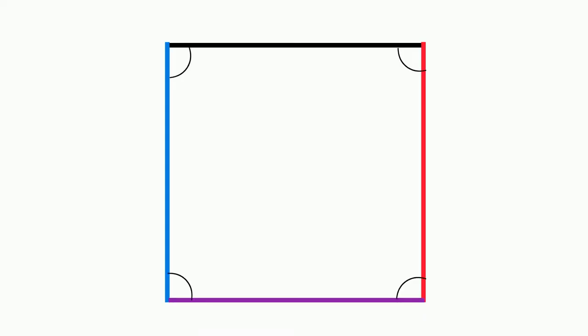Quadrilaterals have four sides and four angles. Each of these quadrilaterals are convex quadrilaterals.